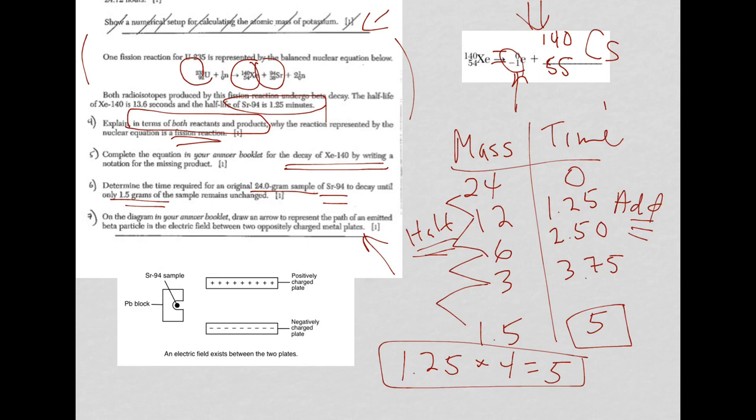So, for this last question, here's the diagram. I cut and pasted it from the answer booklet. It says, draw an arrow to represent the path of the emitted beta particle in an electric field. So, I have an electric field. I have my positive side and my negative side.